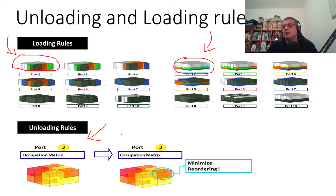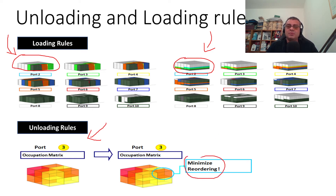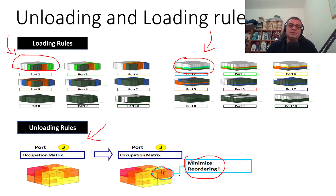We are also trying to define unloading rules, because sometimes we need to rearrange the container ship — which can be advantageous or not. What we're always trying to minimize is this kind of situation: we have to remove this orange container, but its destination is port 4, so we have to unload it and reload it — paying for this extra movement.